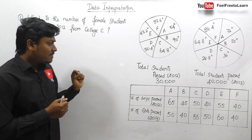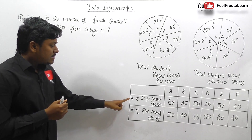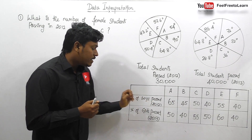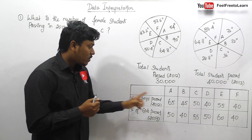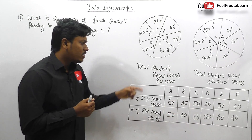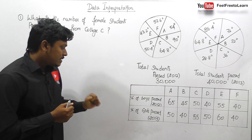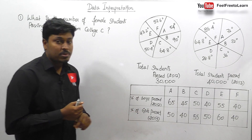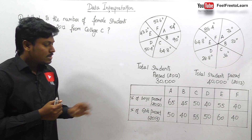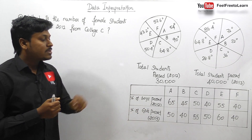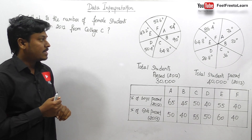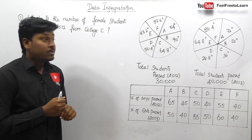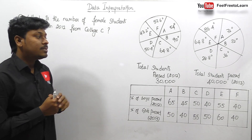Friends, here they have also given a table chart. The percentage of boys passed in the year 2012 — all the values are given in percentage for all the colleges. Similarly, percentage of girls passed in the year 2013 — all the values are given in percentage. Let me move on to all the different questions that are based on this chart.